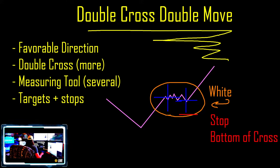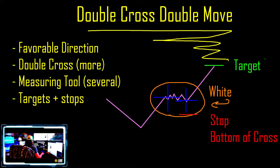The stop is at the bottom of the cross, and our targets are going to be up here on the double move. We're measuring from this pivot to the center of really the lowest cross — in this case it's going to be this one, but oftentimes it'll be the first one. We are looking for the lowest cross.